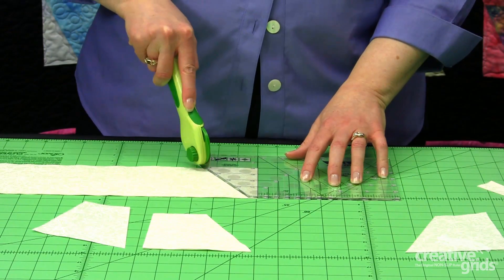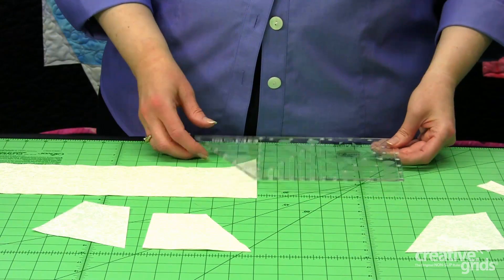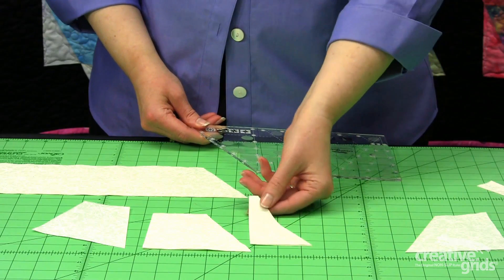So both the A and B pieces can be cut on each edge of the ruler, allowing for no waste from cut to cut.